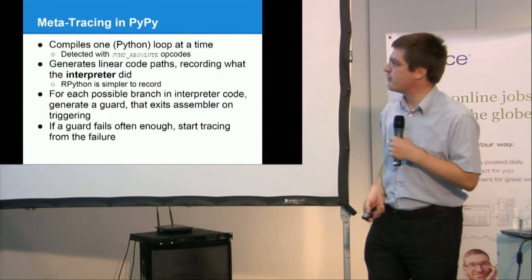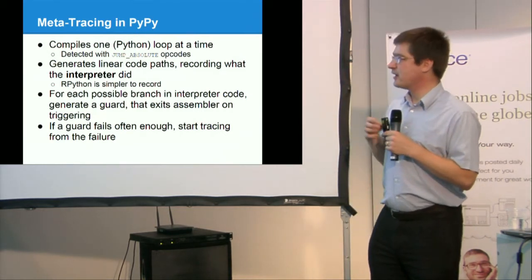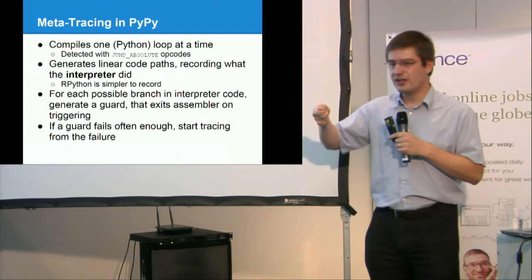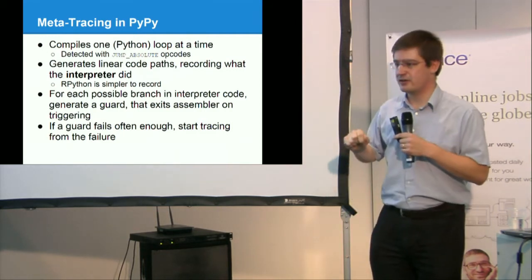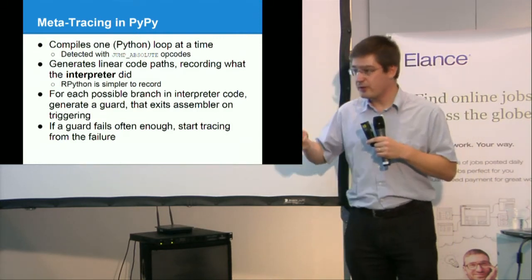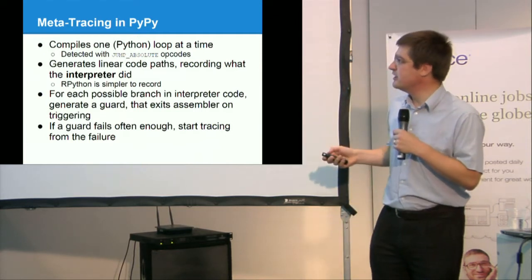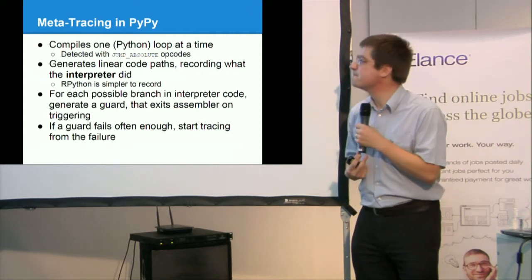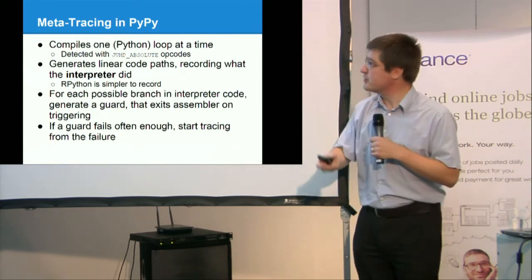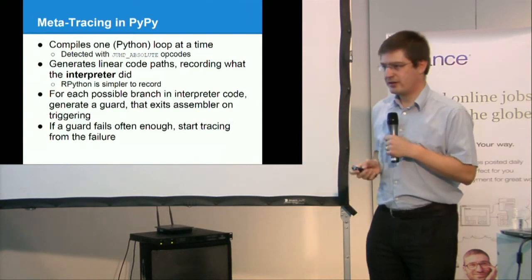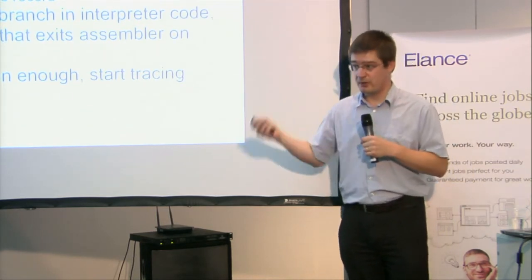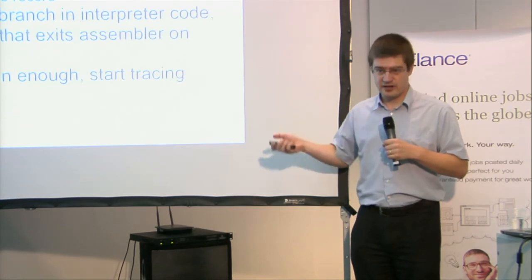So meta-tracing in PyPy will compile one Python loop at a time. Typically, it will be detected with jump absolute bytecode. I think this is one of the only functions that is allowed to jump back in the interpreter bytecode. And what is interesting is that when you trace, you trace from the jump absolute. You say, oh, this is the one-thousandth time I run this bytecode in this particular place. So I will trace everything by recording all operations done by the interpreter.